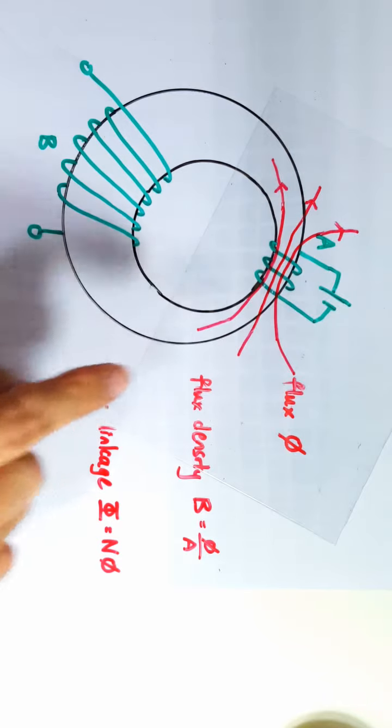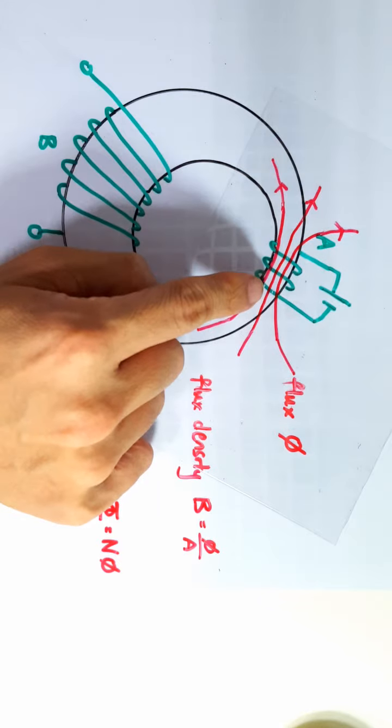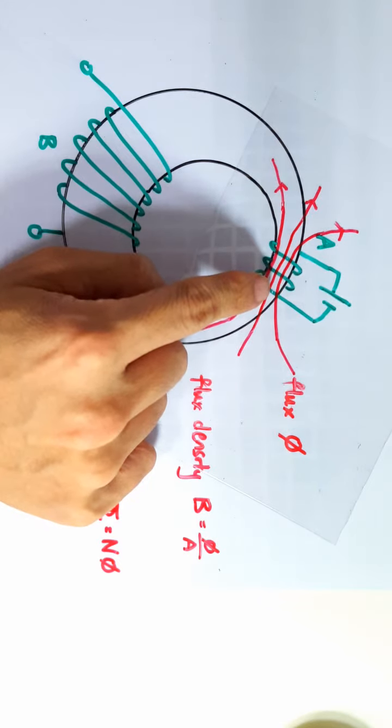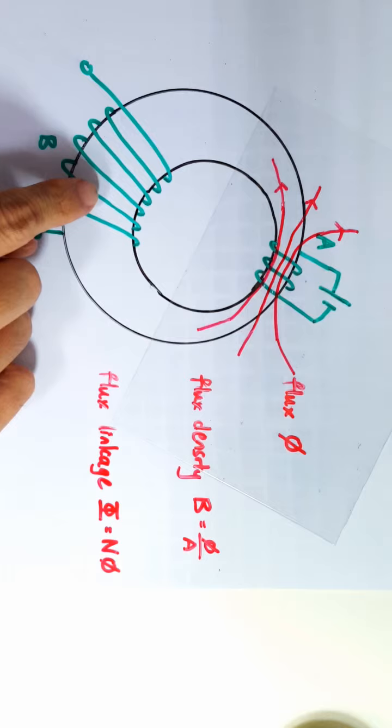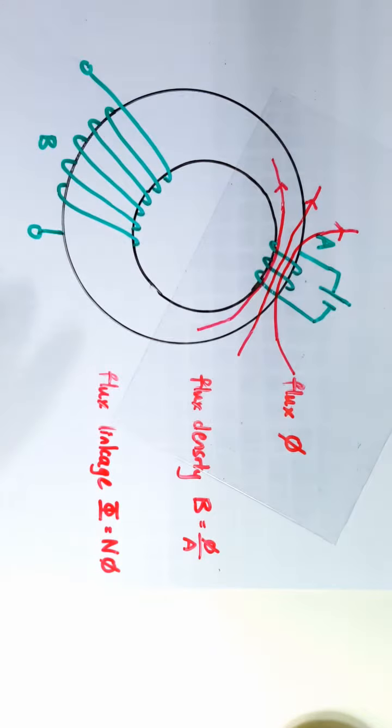If this is the case, then you see that you have quite a bit of magnetic flux in this coil but nothing here. So the magnetic flux through this coil and through this coil will be different.